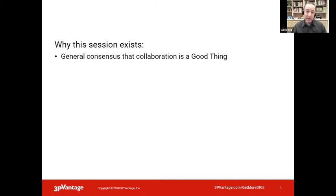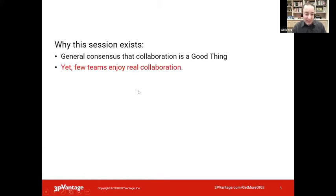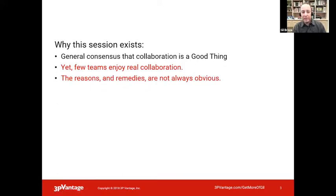Very few people with Agile work don't think of collaboration. Agile is huge on collaboration — it's a principle, it's everywhere. However, at least in my experience, few teams actually enjoy real collaboration. They'll be friendly, they'll be correct, they'll be helpful, they'll cooperate, but they don't really collaborate. And what's particularly disturbing is that it's not always easy to explain why that is — the reasons are not always obvious.